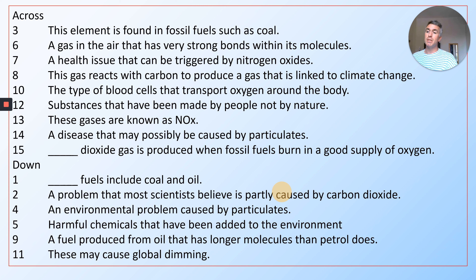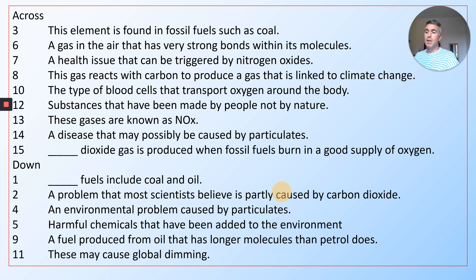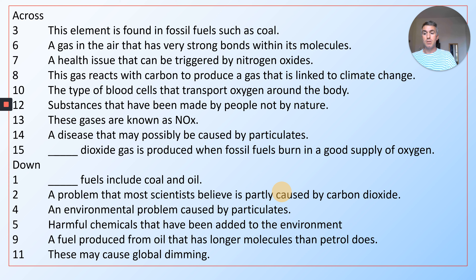Number three across: the element found in fossil fuels such as coal. Six across: a gas in the air that has very strong bonds with its molecules. Seven: a health issue that can be triggered by nitrogen oxides. Eight: this gas reacts with carbon to produce a gas that is linked to climate change. Number ten: the type of blood cells that transport oxygen around the body.